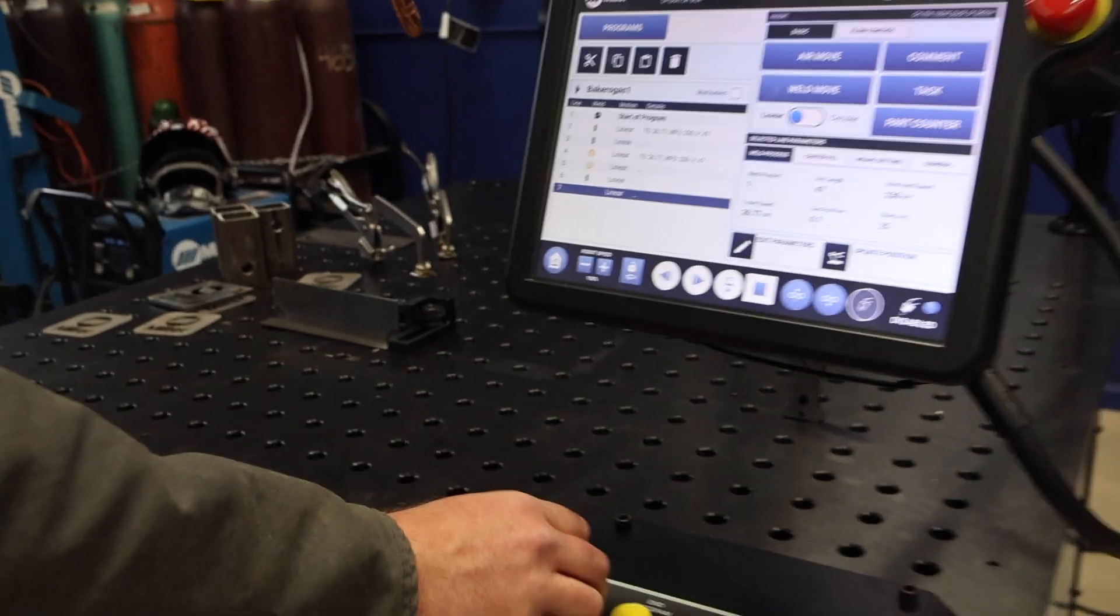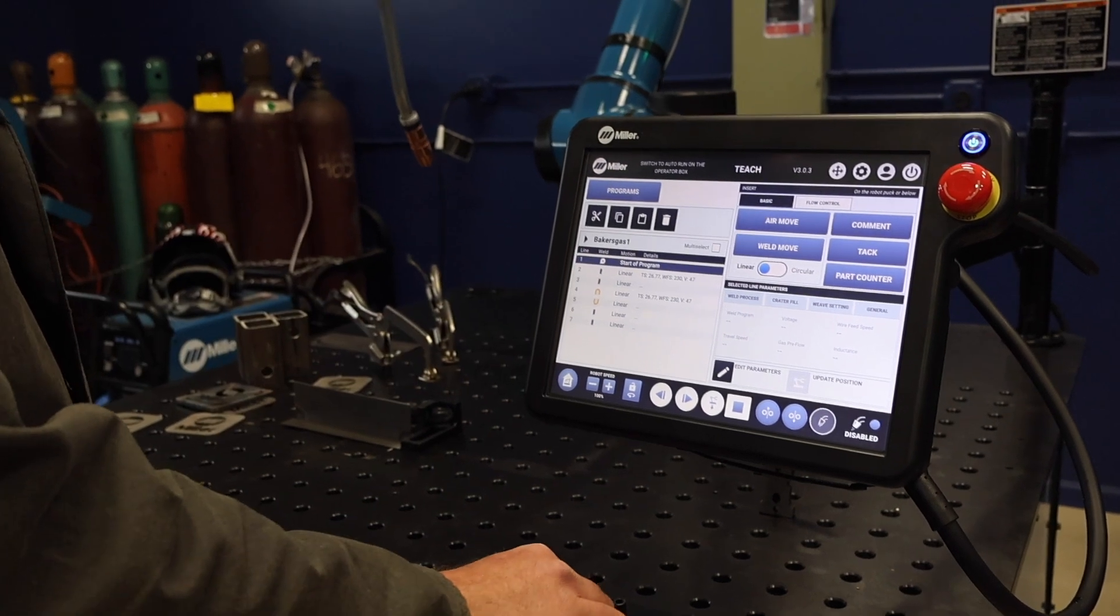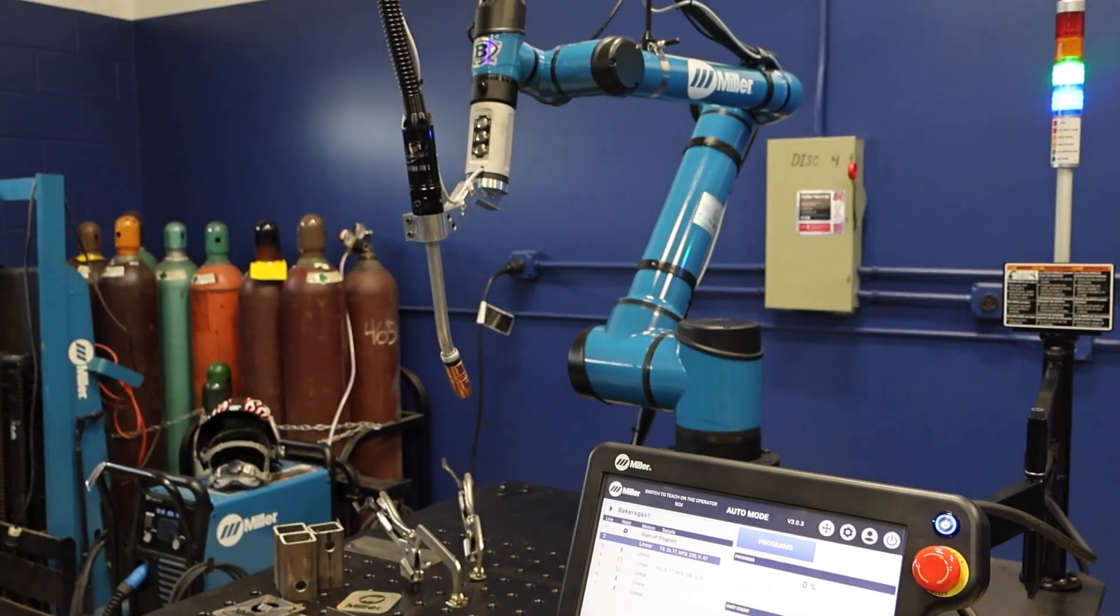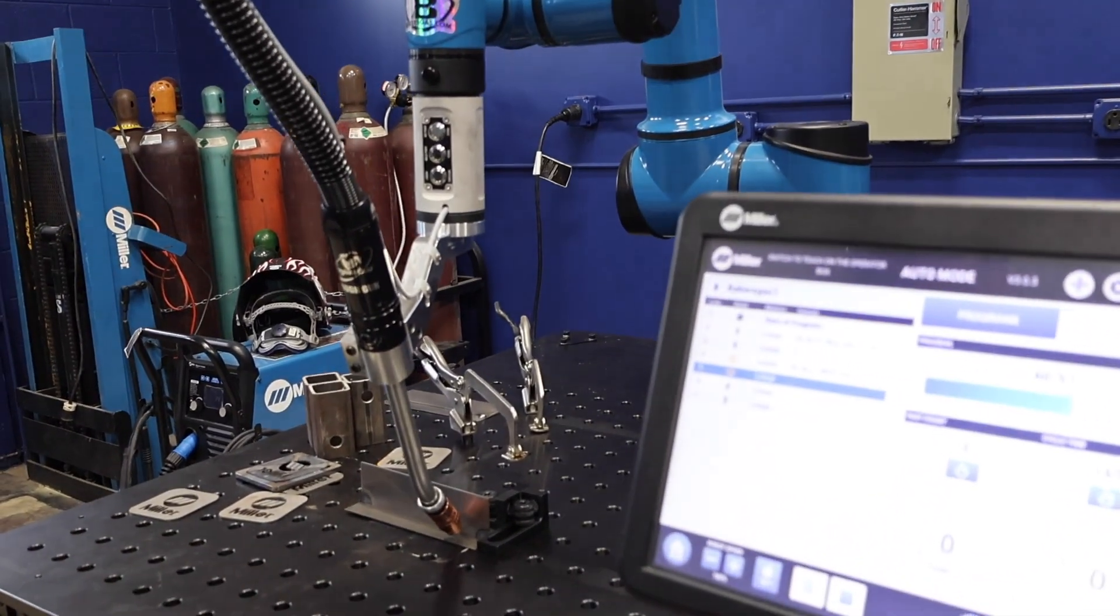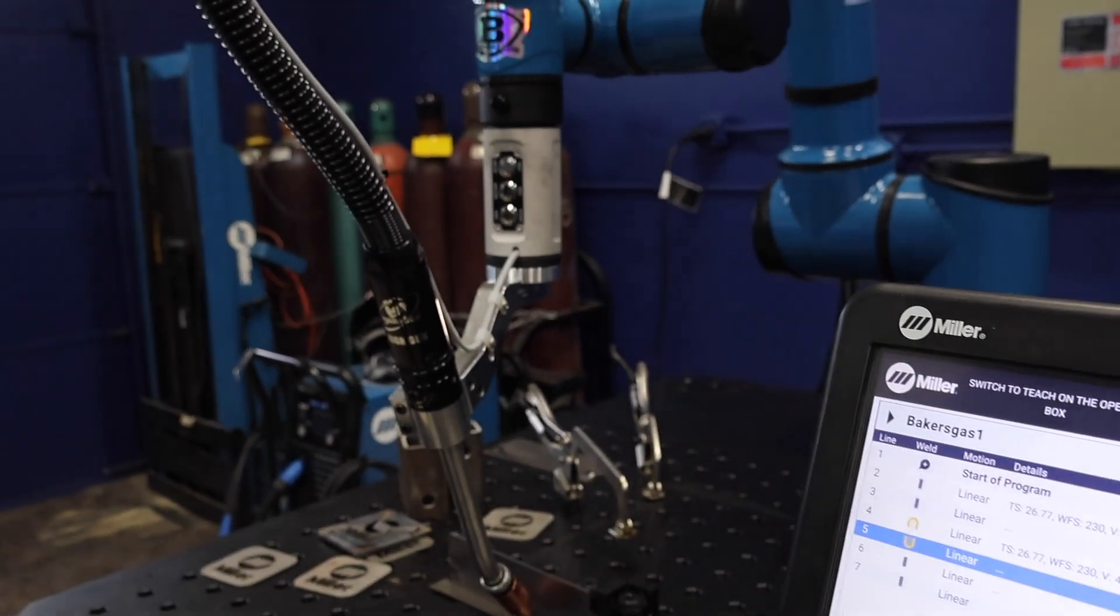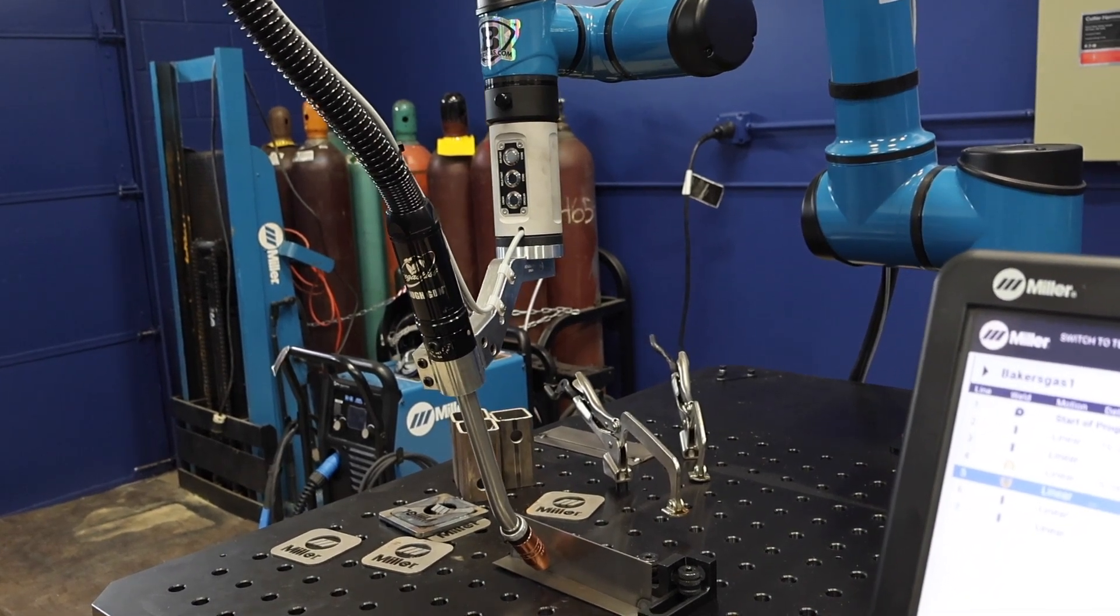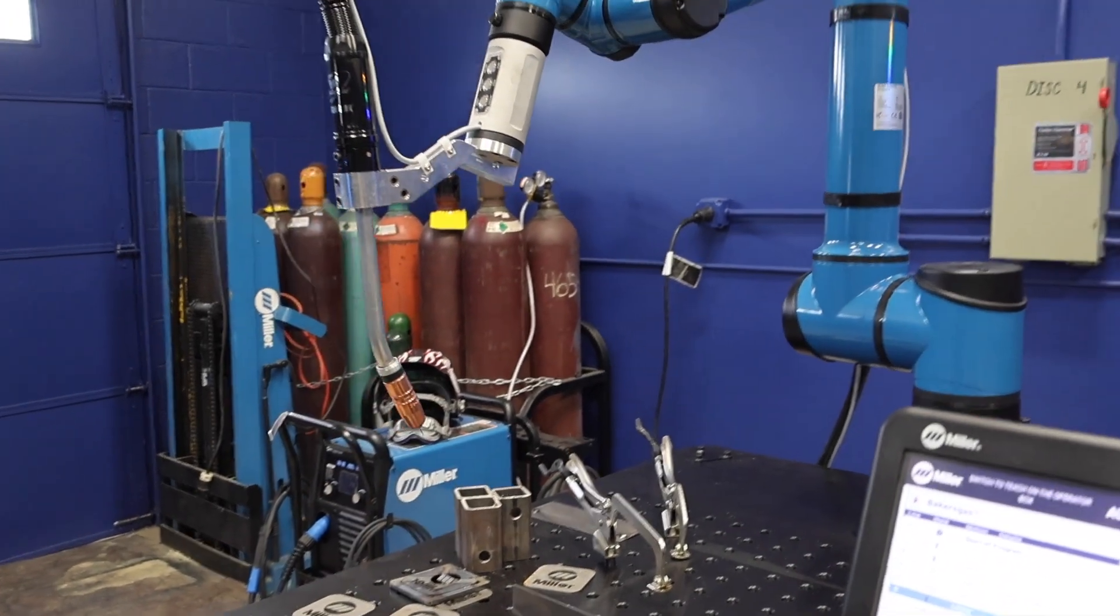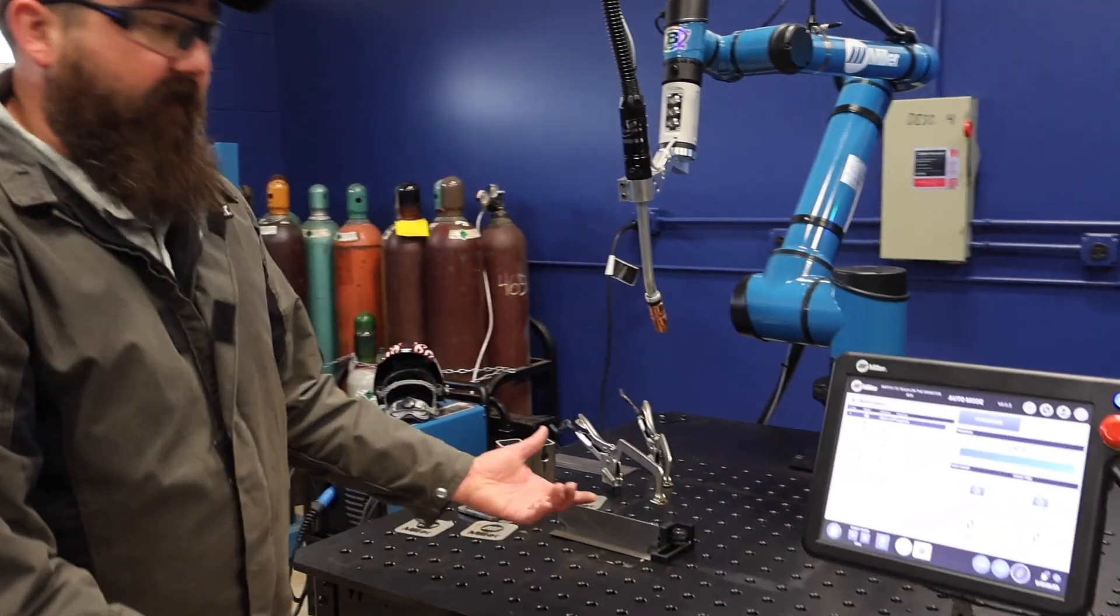There's our basic weld. Now we're going to teach. If we want to run the program, we'll go back up to auto, welding is off, and we'll just play the program. It's going to run the weld out. There it is, fairly simple. You can see how fast that took.